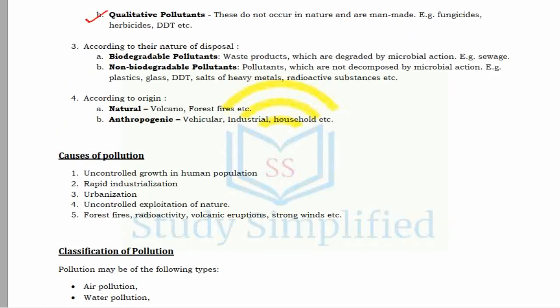There is another criteria called qualitative pollutants. These do not occur in nature and are man-made, such as fungicides, herbicides, pesticides, and DDT.